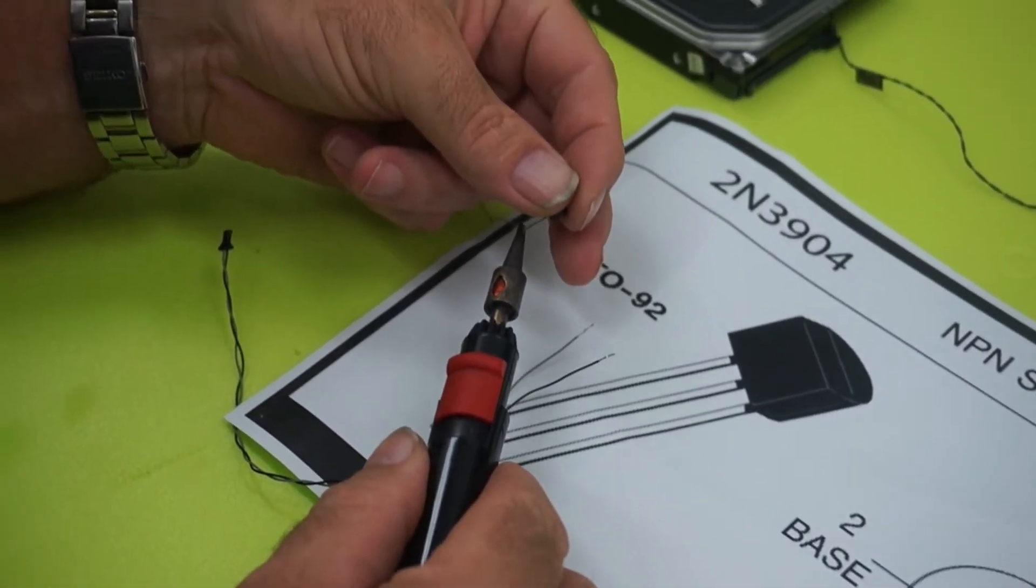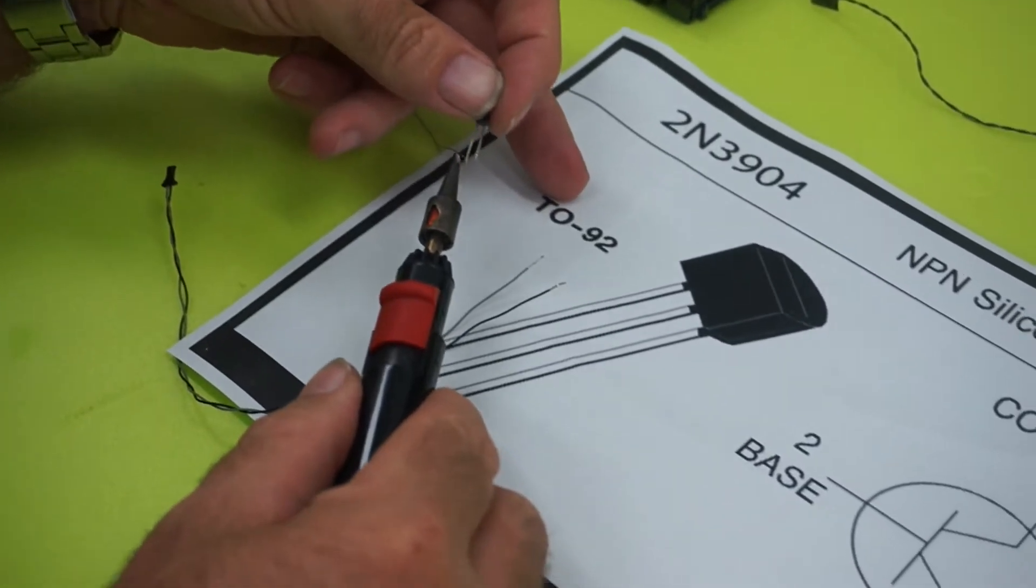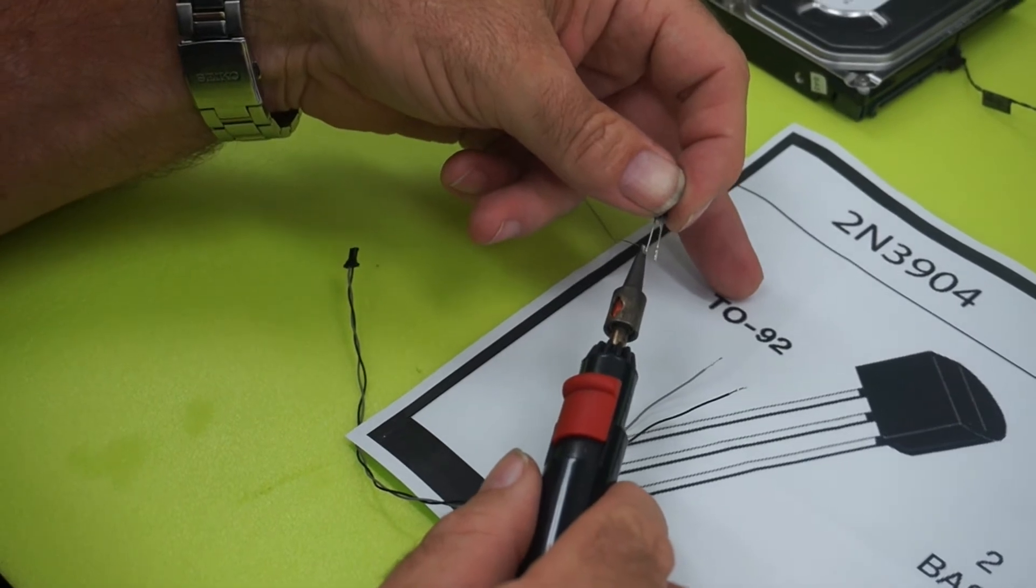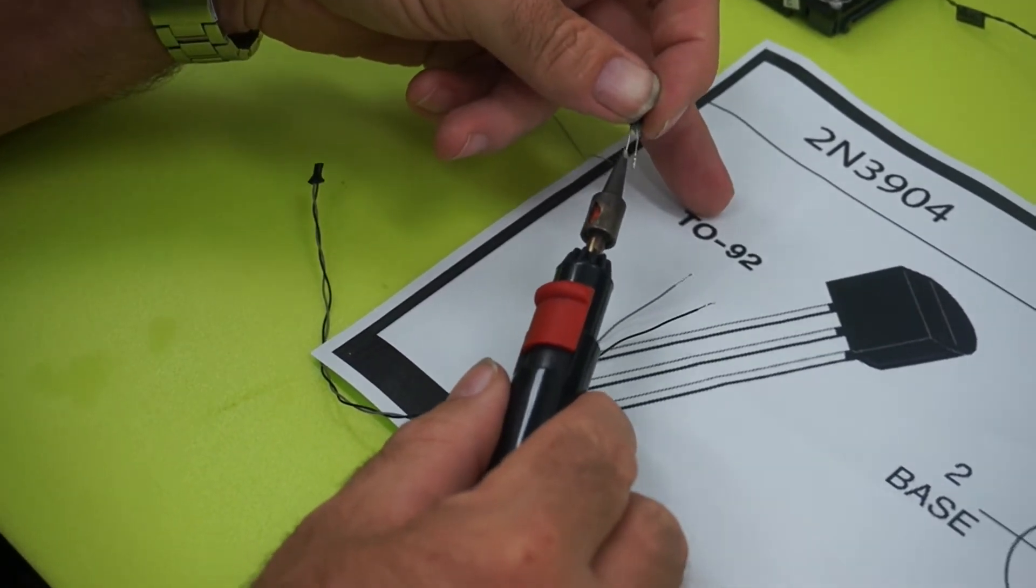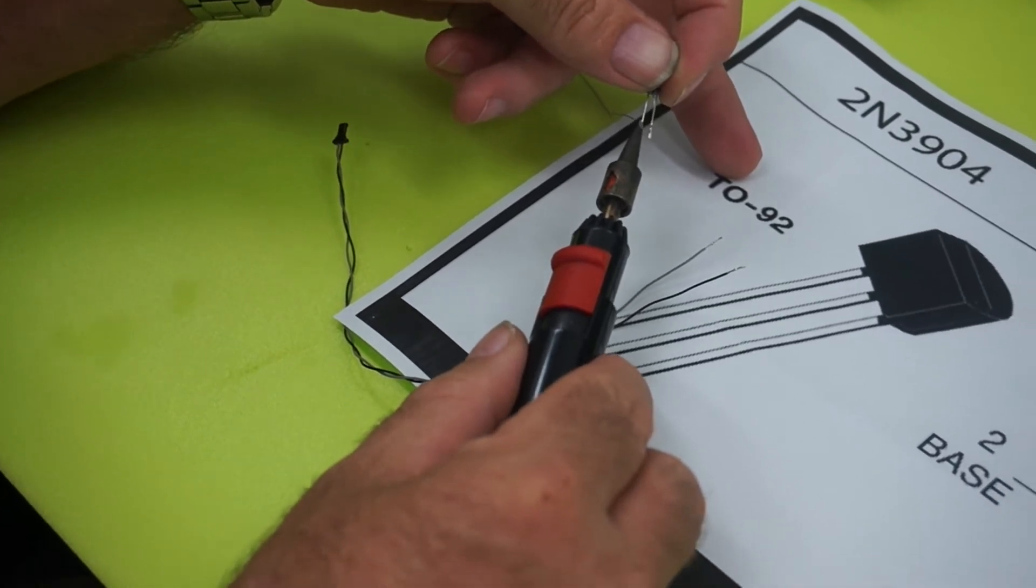Where this comes from is from the older iMacs 2006, 2007, 2008 iMacs and MacBooks. They were using this exact transistor to connect to the board to control the temperature. For the newer boards it just doesn't work.